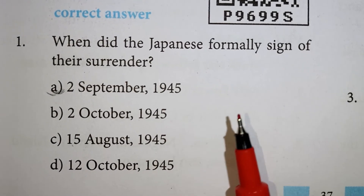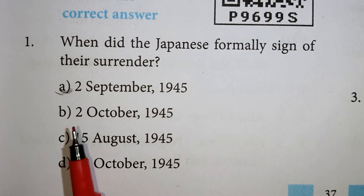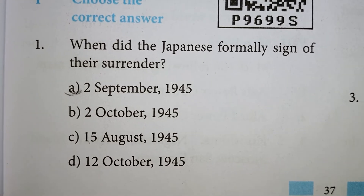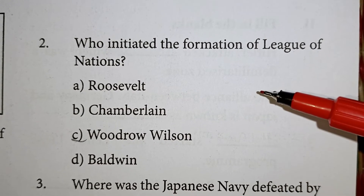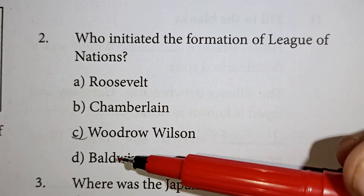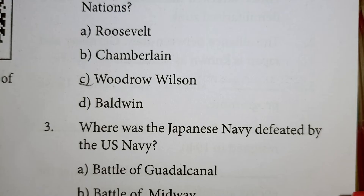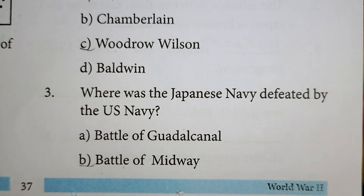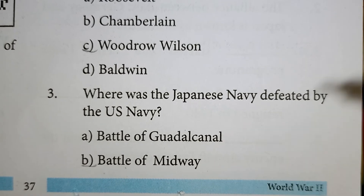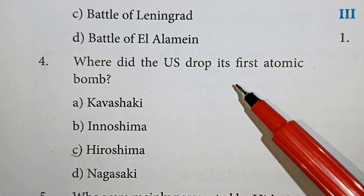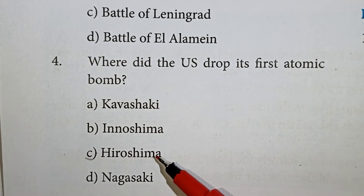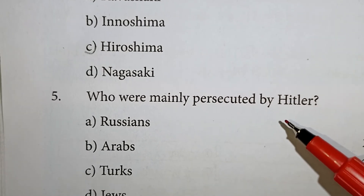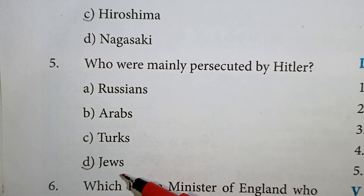When did Japan formally sign its surrender? 2nd September 1945 is correct. Who initiated the formation of the League of Nations? Woodrow Wilson — correct. Where was the Japanese Navy defeated by the US Navy? Battle of Midway — correct answer. Where did the US drop its first atomic bomb? Who was mainly persecuted by Hitler? Jews is correct.